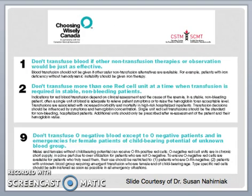Choosing Wisely Canada recommendations from the Canadian Society for Transfusion Medicine advise that we should not be transfusing blood if other non-transfusion therapies or observation would be just as effective. This means that in an iron-deficient patient without hemodynamic instability, they should be given iron therapy instead. Do not transfuse more than one red cell unit at a time when transfusion is required in a stable, non-bleeding patient. And finally, do not transfuse O-negative blood except to O-negative patients and in emergencies for female patients of childbearing potential of unknown blood group.